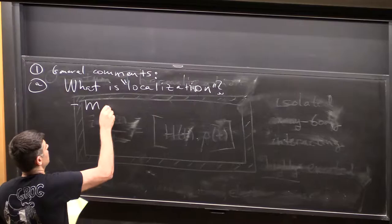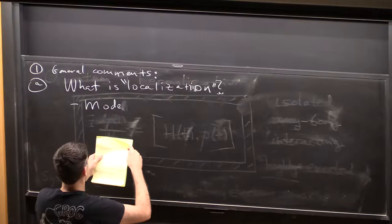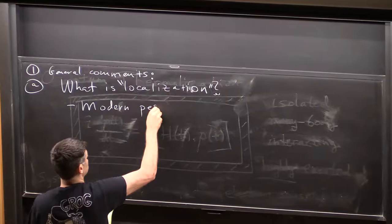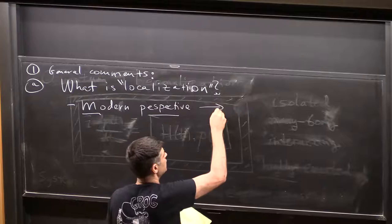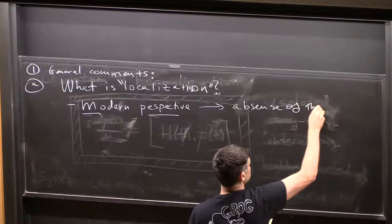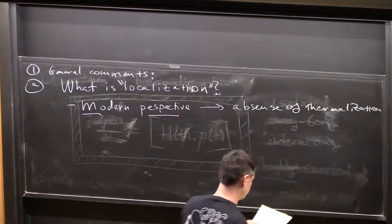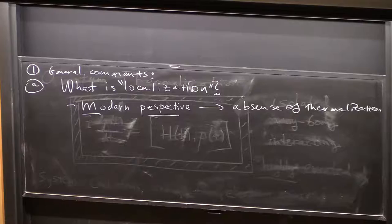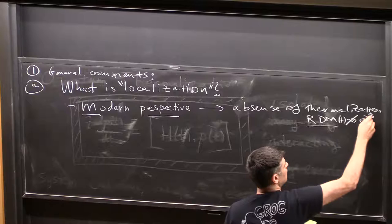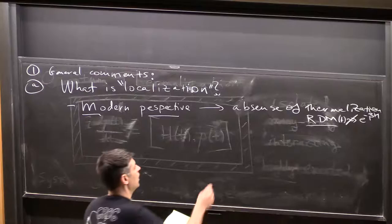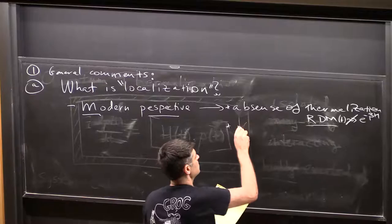The kind of localization we're interested in is localization in quantum problems. There's a modern perspective: localization is absence of thermalization in the sense that David defined precisely. I'll use shorthand and say the reduced density matrices upon time do not flow to thermal ones.